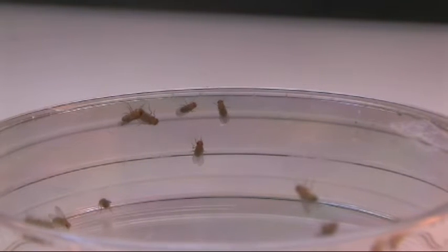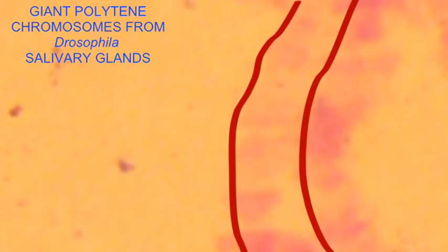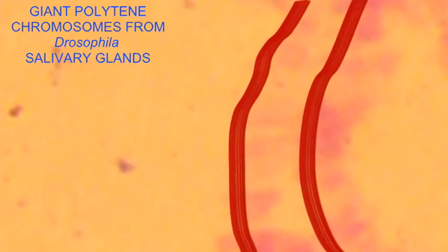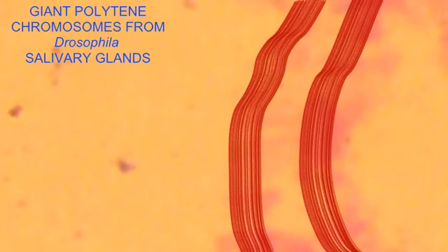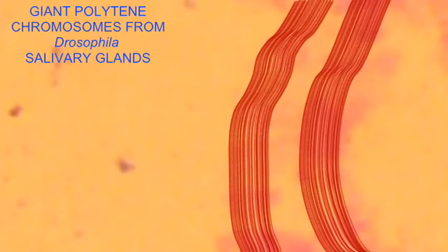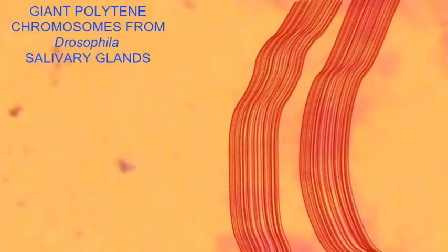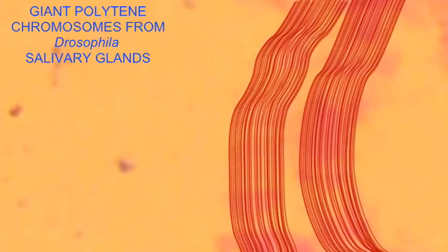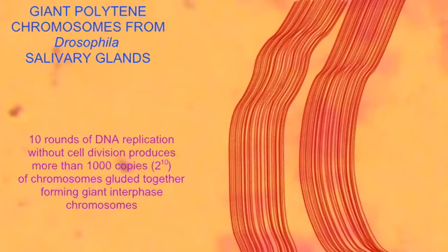In the salivary glands of Drosophila, chromosomes replicate themselves in 10 cycles of replication, but they do not then undergo cell division where the duplicated chromosomes are separated from each other. Instead, they remain glued to each other and remain in the dense chromosome formation during interphase.